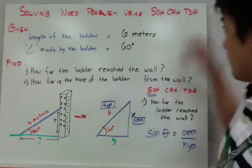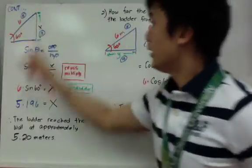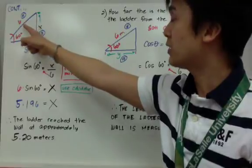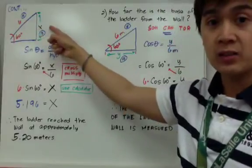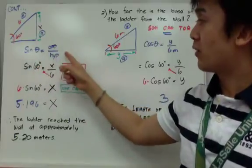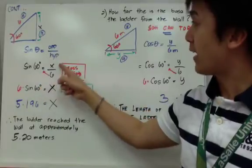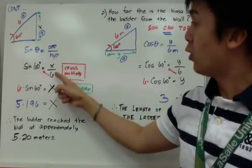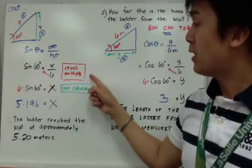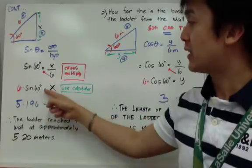Let's solve the first problem. We have our right triangle with 60 degrees and the hypotenuse of 6. We need to find the opposite side x. The equation is sine theta equals opposite over hypotenuse. By substitution, sine 60 degrees equals x over 6 meters. By cross multiplication, our equation becomes 6 times sine 60 degrees equals x.